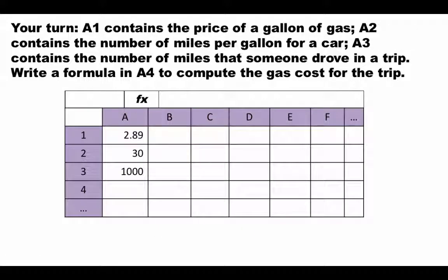Consider this problem. Cell A1 has the price of a gallon of gas. A2 contains the number of miles per gallon for a car — the car's mileage. A3 contains the number of miles that someone drove that car on a trip. In cell A4, we want to write a formula to compute the total gas cost for the trip. Pause the video, commit to an answer, and then continue.